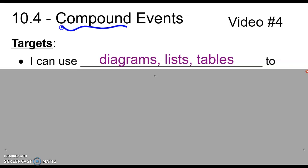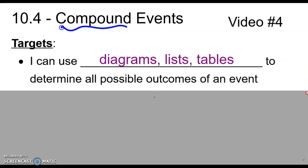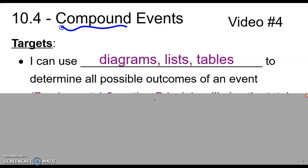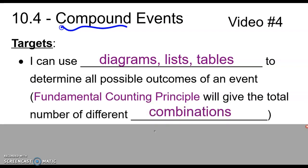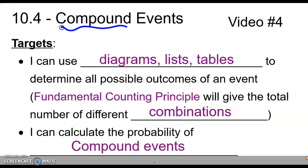Compound means more than one event happening at a time. Our first target is to use diagrams, lists, and tables to determine all the possible outcomes of a compound event. We're also going to use the fundamental counting principle to get the total number of different combinations. And our final target is to calculate the probability of different compound events.